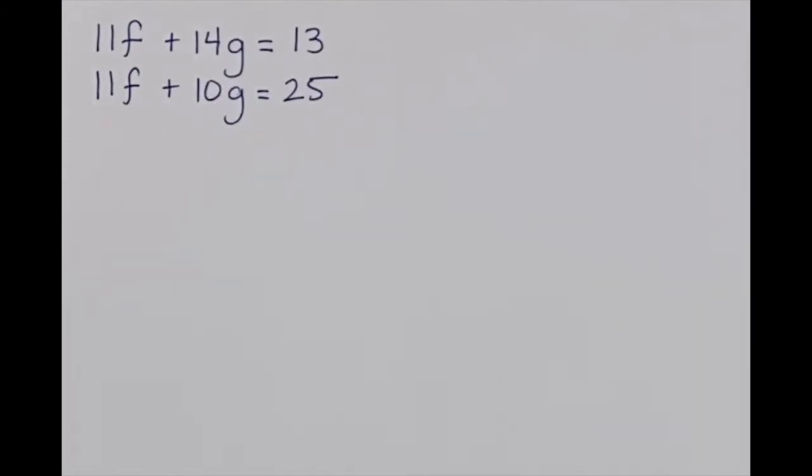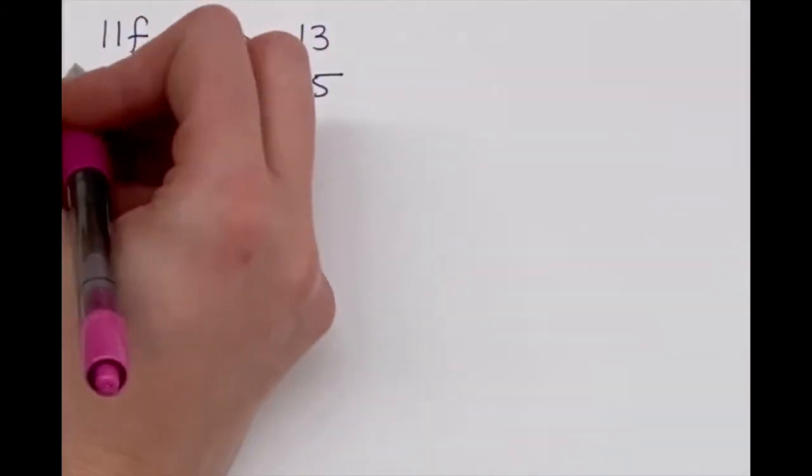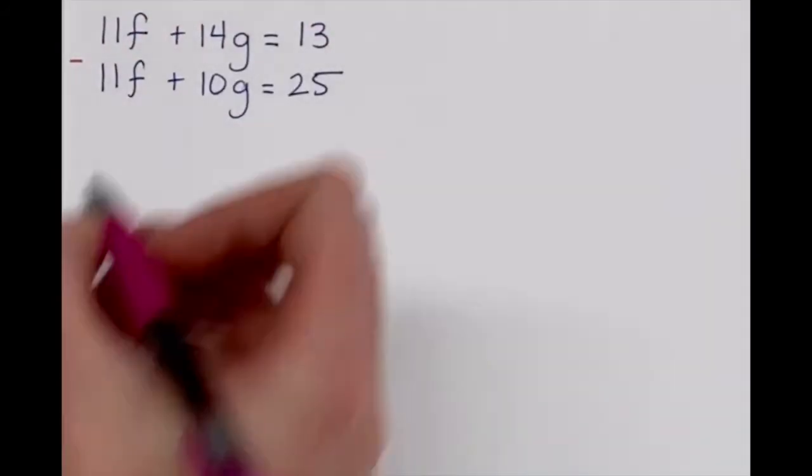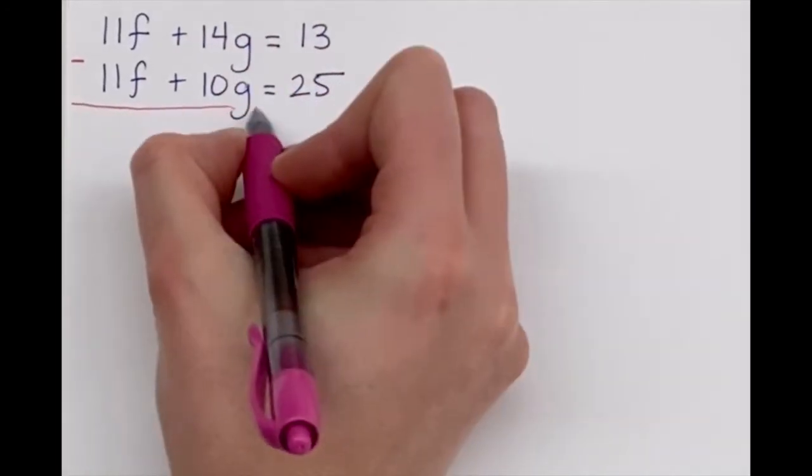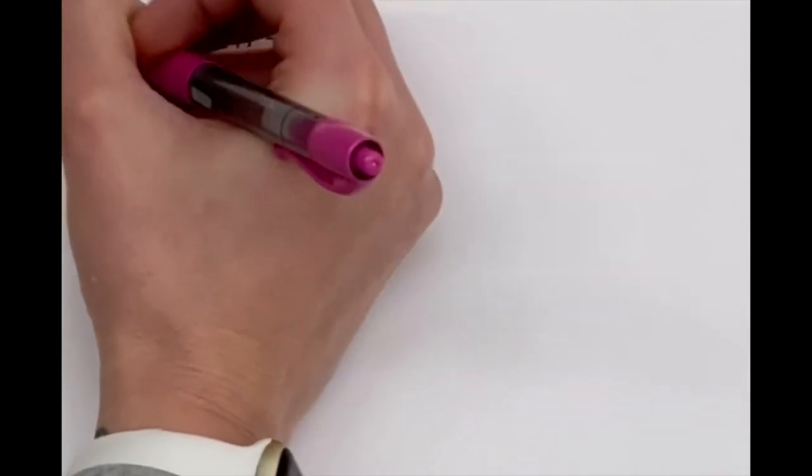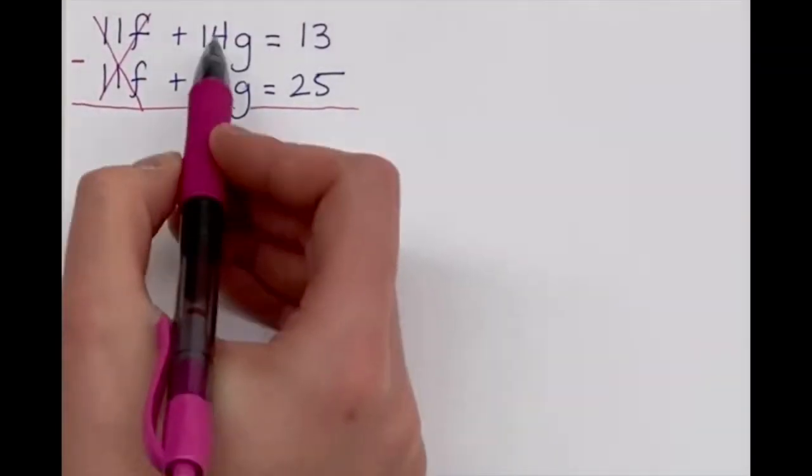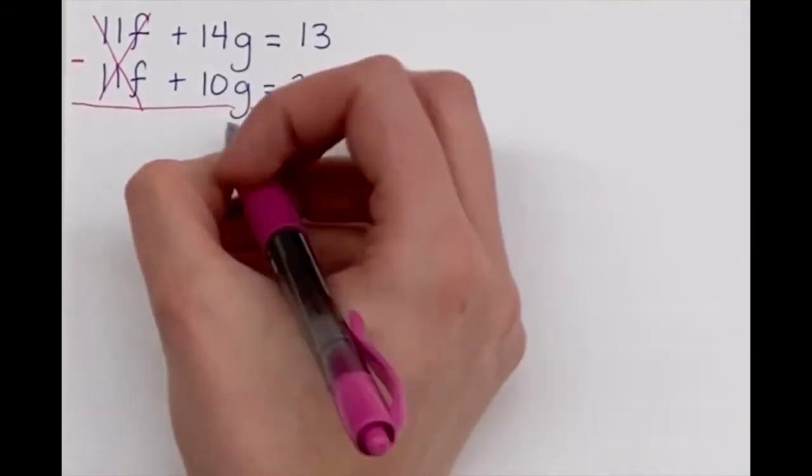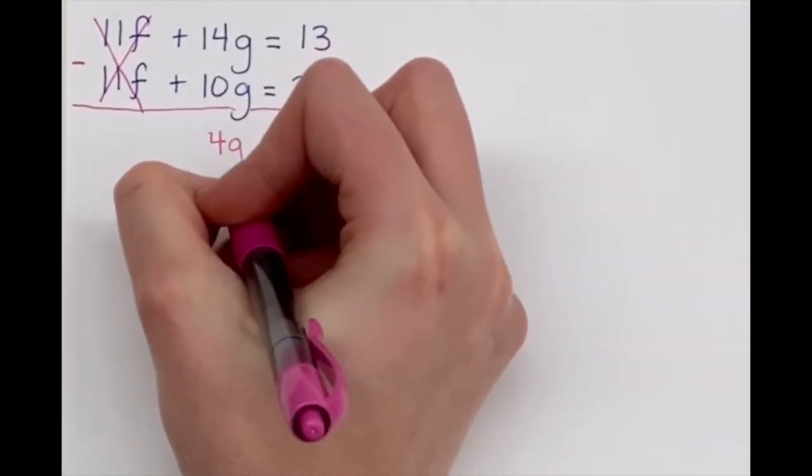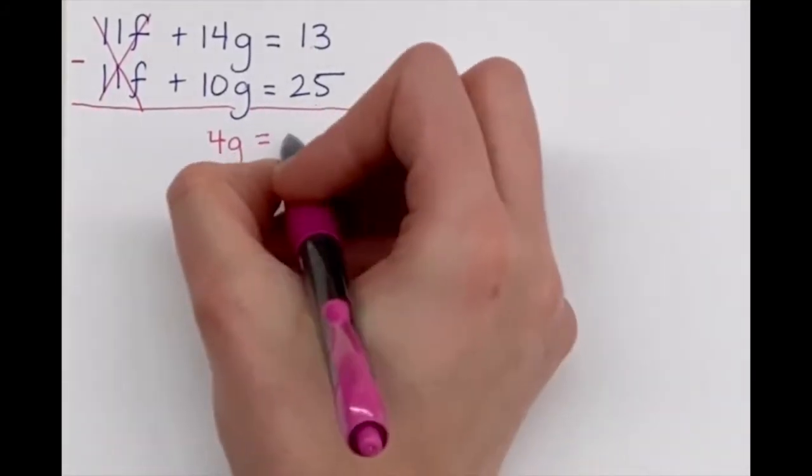So instead of adding to eliminate, we're going to subtract. So if I subtracted these two equations, then we're going to see that the 11 f's are going to cancel out. 11 f minus 11 f is 0. Then we subtract the rest. 14 g minus 10 g is 4 g. 13 minus 25 is negative 12.